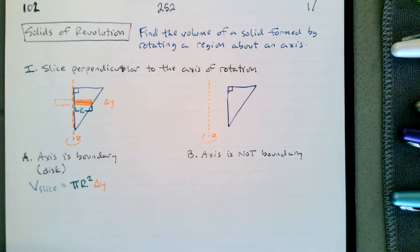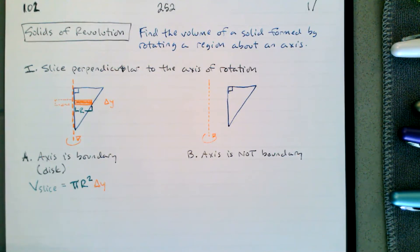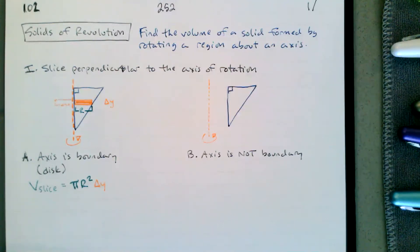We want to use multiplication, but the size of the circle keeps changing. It's always going to be pi r squared. Then we write r, the radius, in terms of the variable y. We know we're going to have to involve the function in some fashion because the radius is a horizontal and the delta y is a vertical.